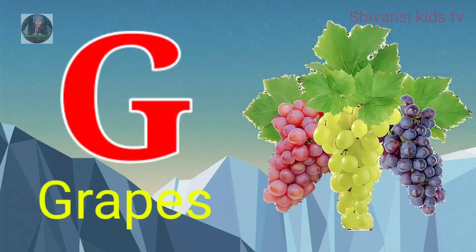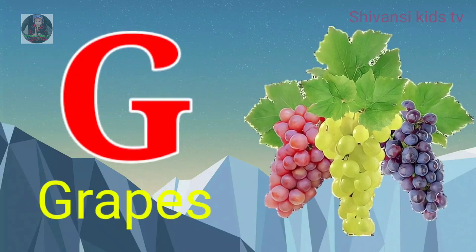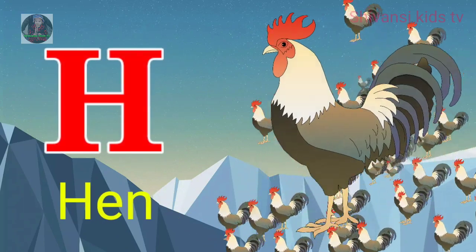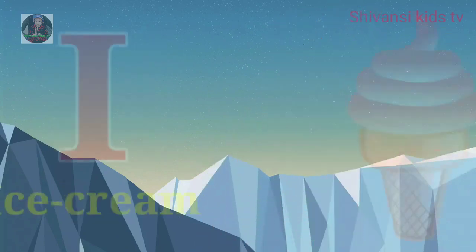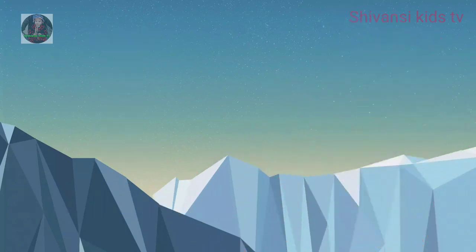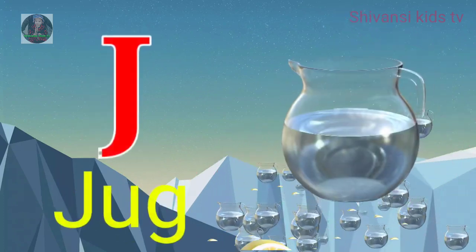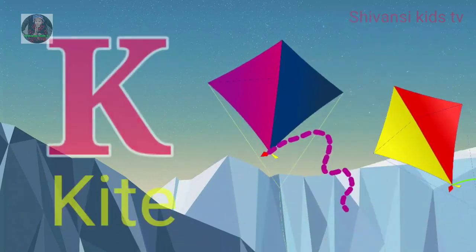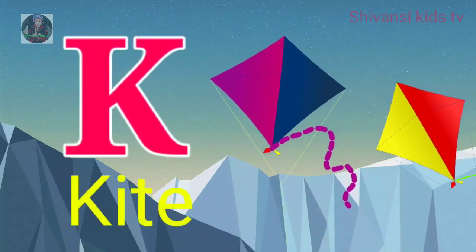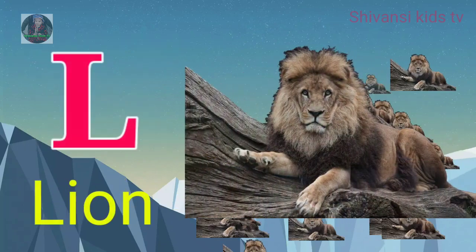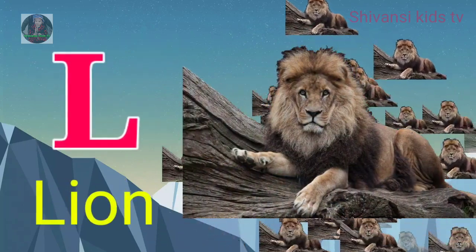G for grapes, H for hand, I for ice cream, J for jug, K for kite, L for lion.